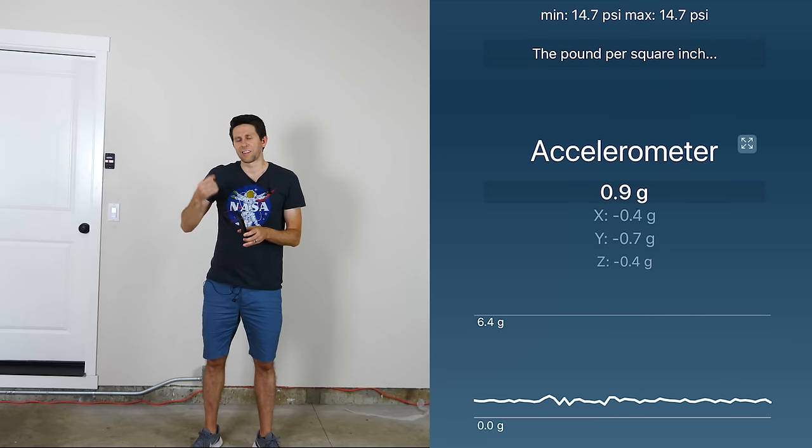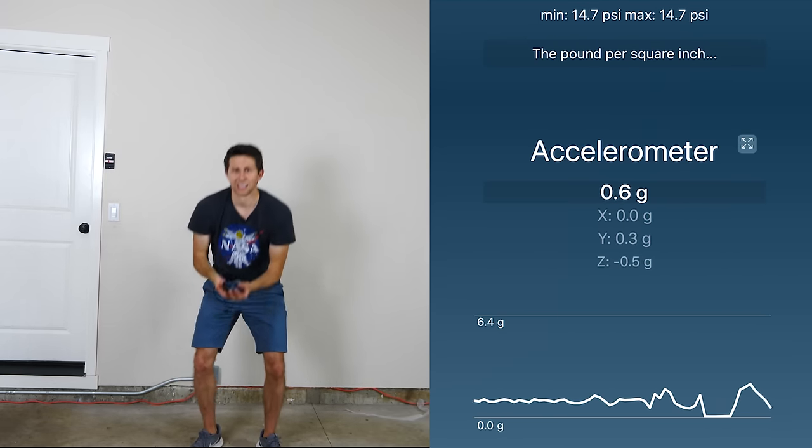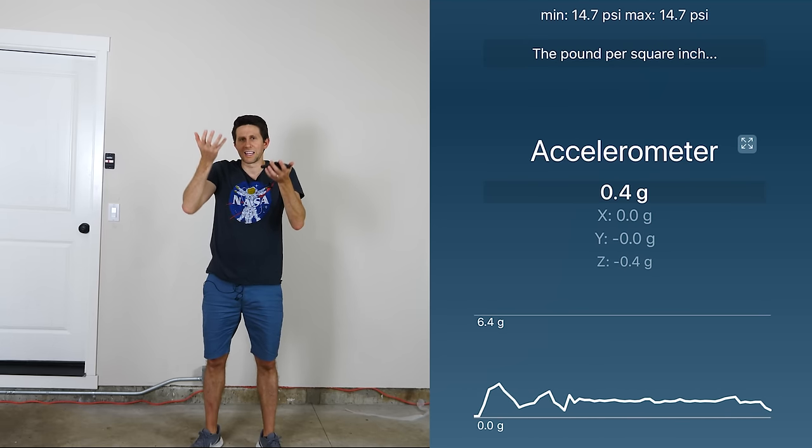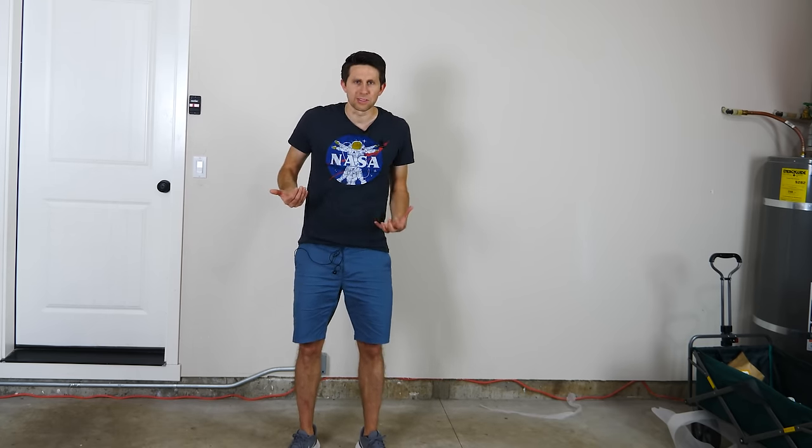So what that means is if you just throw something up in the air or just drop it, as long as there's nothing touching it, it'll just register zero G. So it won't feel any downward pull on it. For example, the only reason that you feel like you're being weighted down and pulled down is because the ground is actually pushing up on you. If you didn't have a ground pushing up on you, then you wouldn't feel weighted down.